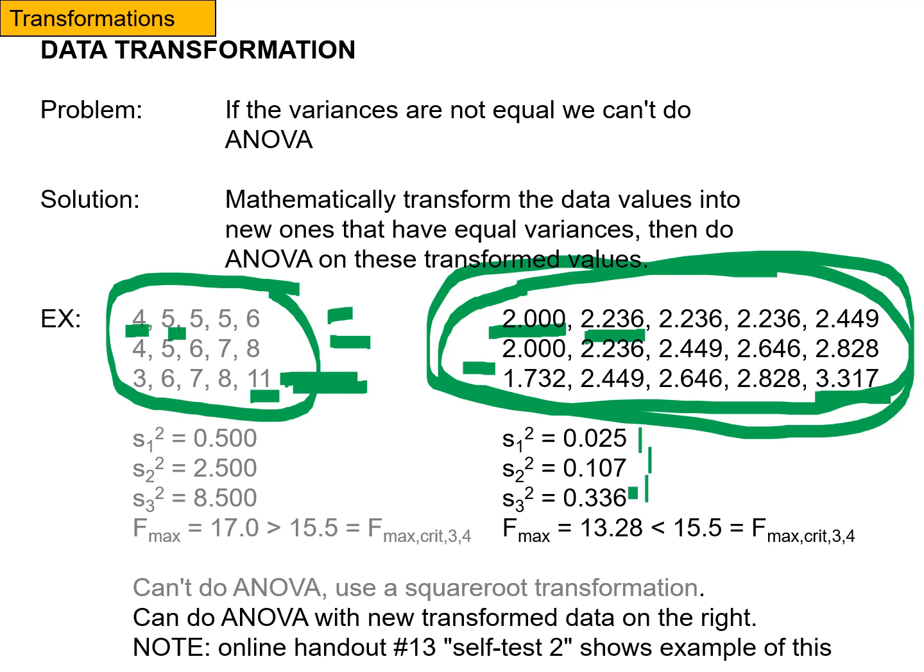Take the largest one divided by the smallest one. I would get 13.28. That is now less than the critical value. So now I can assume that the variances in my population of square rooted values are equal and I could do an ANOVA.